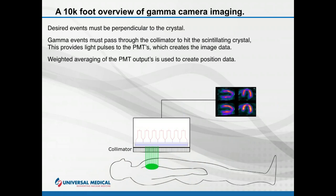We introduce a device called a collimator, which forces all gamma rays to be parallel to each other and perpendicular to the crystal in order to pass through and interact with it. Once a ray hits the crystal, the photomultiplier tubes detect it and use weighted averaging to generate a position — creating an image. The left-hand part of the heart's emissions impact further left on the detector, and the right-hand part is detected by a different portion of the crystal. This is critical in creating an accurate image.